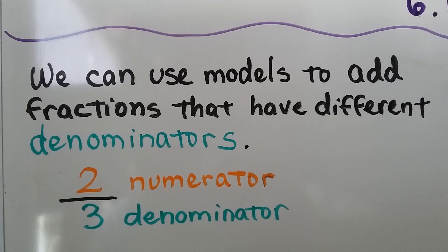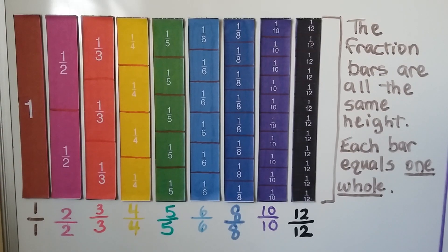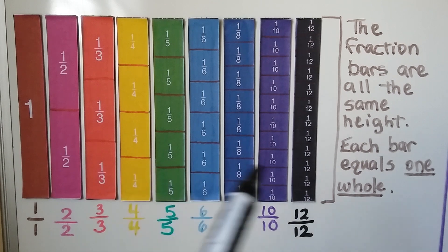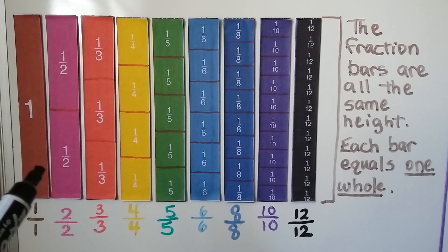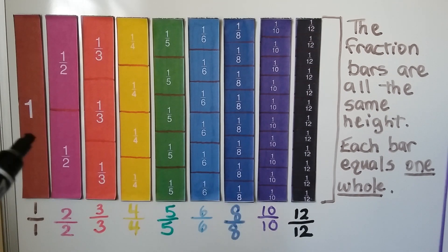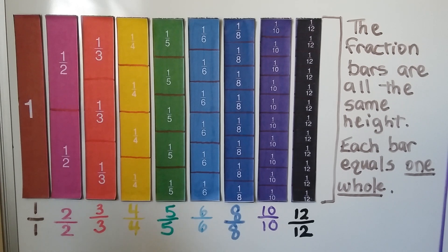We can use models to add fractions that have different denominators. The 2 is the numerator, then we have a fraction bar, and that 3 is the denominator. Here we've got some fraction bars and strips, and this is really one sheet of paper. You can find them on my Facebook page or online — just type in fraction strips or fraction bars.